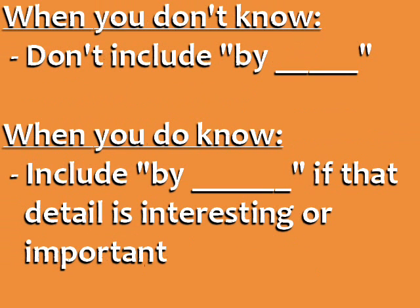When you don't know who did the action, in general don't include 'by someone' in the passive voice sentence. And when you do know who did the action, you can include 'by someone' if that detail is interesting or important.